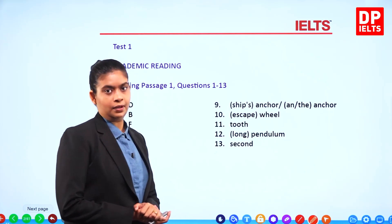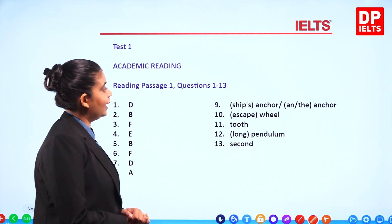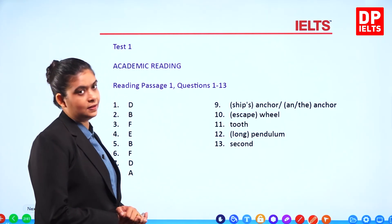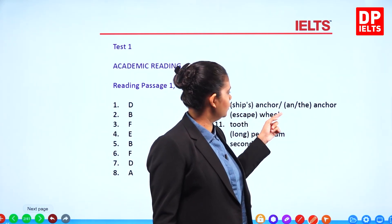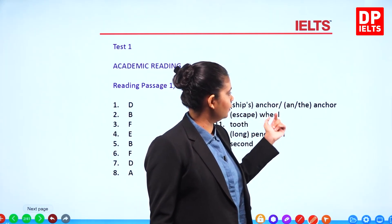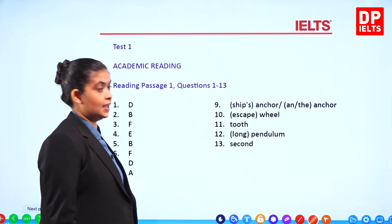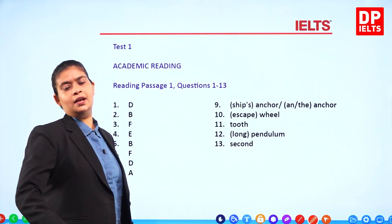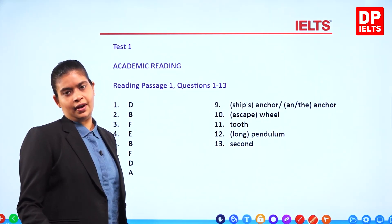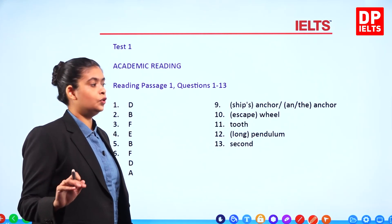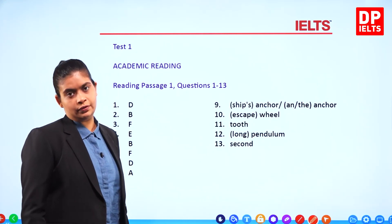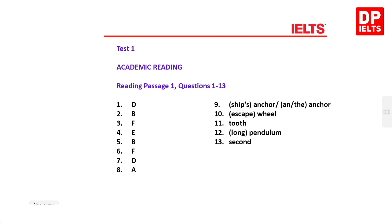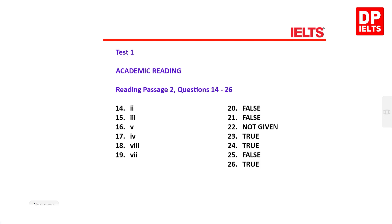For example, 'pendulum' is a compulsory word. 'Anchor' is compulsory. So you can say 'ship's anchor', 'an anchor', or 'the anchor'. You can say 'escape wheel', but if you don't have 'escape' that's fine — but you must have 'wheel'. If you only have 'escape', the answer is wrong.